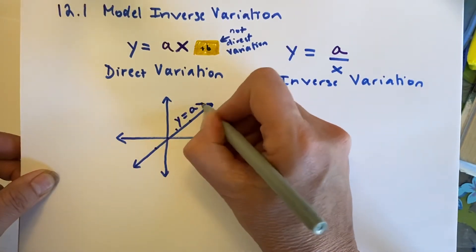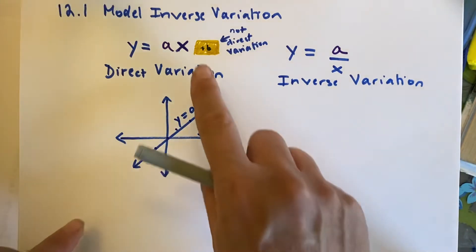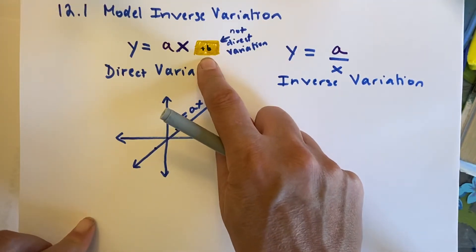It's a line which goes through the origin because there's no plus b, there's no intercept.